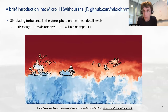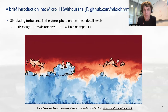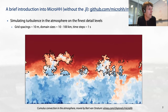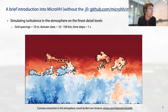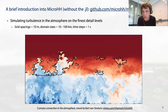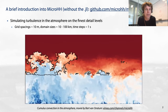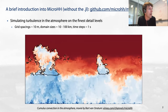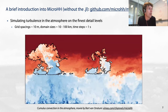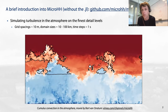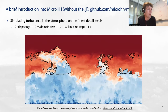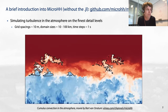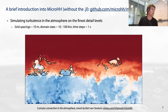I come from the atmospheric sciences. My work focuses a lot on simulating clouds and convection, using high performance computing to learn more about how clouds work. It's basically simulation — if we look from atmospheric modeling at the highest detail level, you can think of grid spacings of approximately 10 meters and domain sizes on the order of 10 to 100 kilometers with time steps of one second. This type of work is very different from climate modeling or numerical weather prediction, which happens at much larger scales.